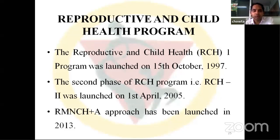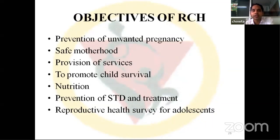Reproductive and Child Health Program was launched on 15th October 1997. The second phase of the RCH program was launched on 1st April 2005. The present RMNCH+A approach was launched in 2013. Objectives of the reproductive and child health program are prevention of unwanted pregnancy, safe motherhood, provision of services to promote child survival, nutrition, prevention and treatment of STDs, and reproductive health survey for adolescents.